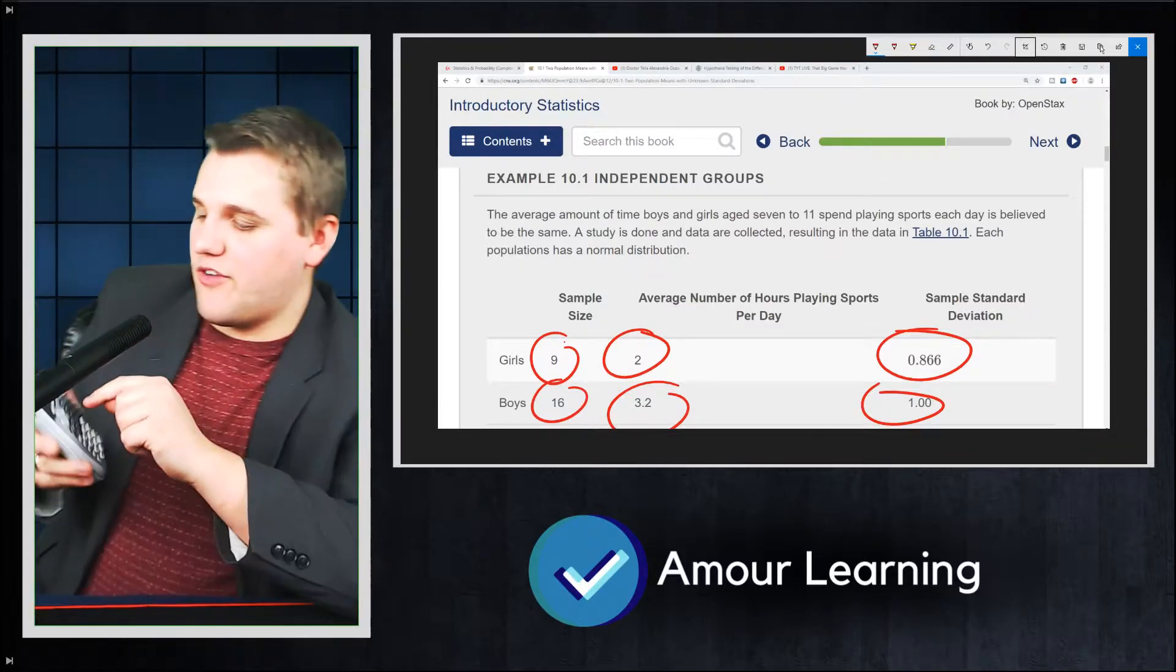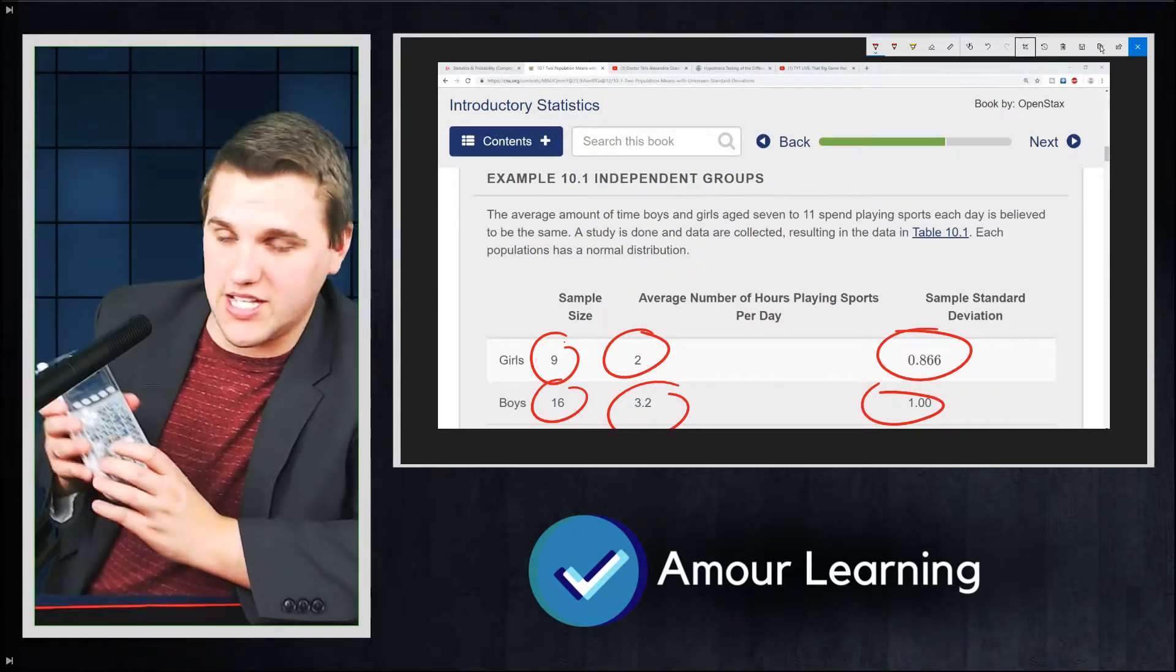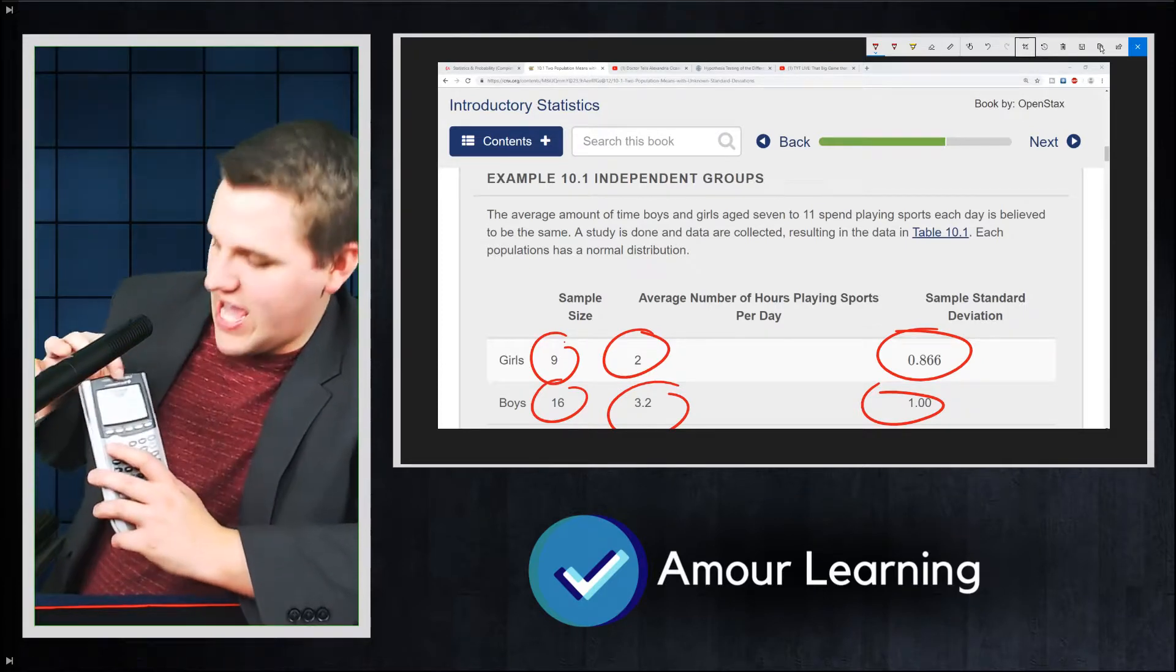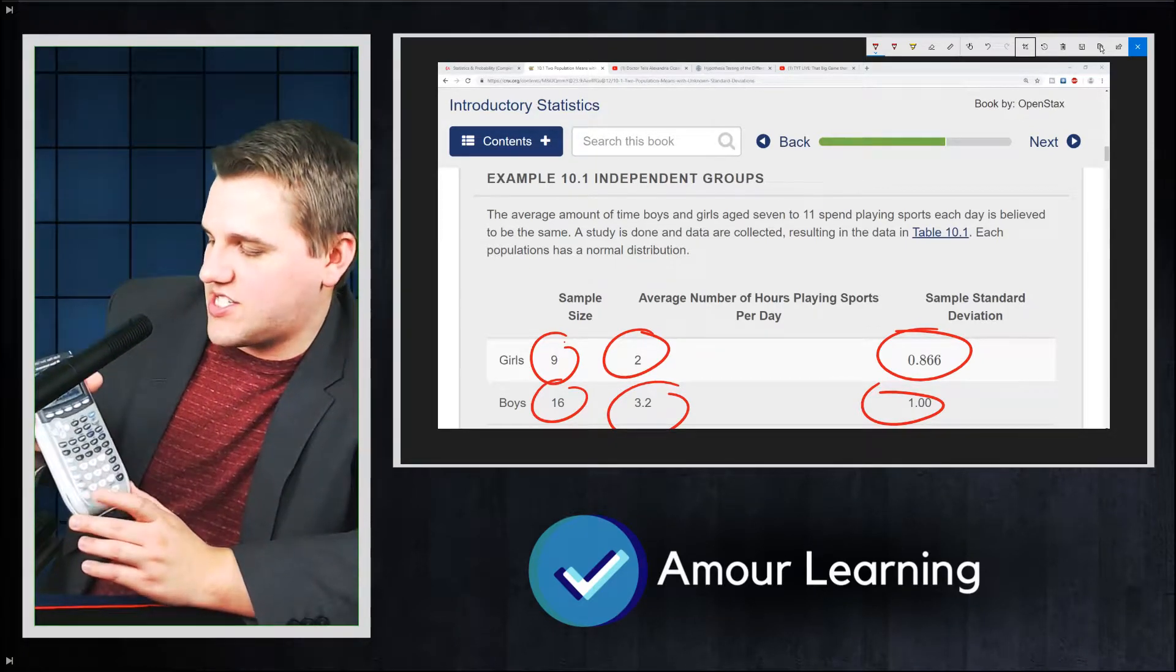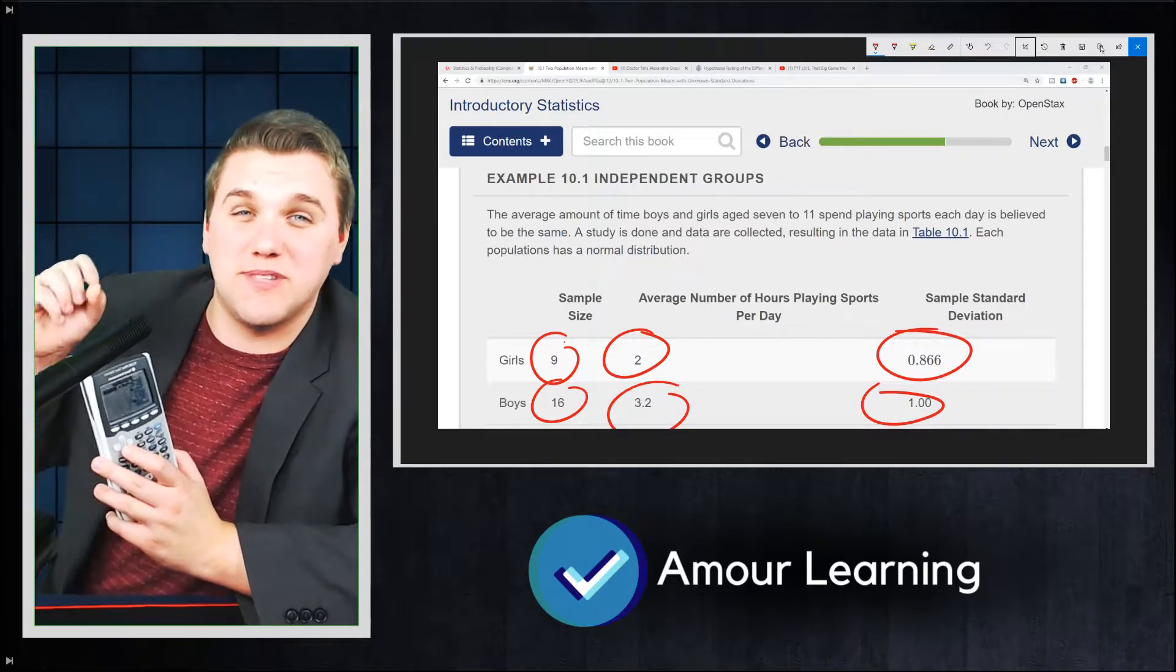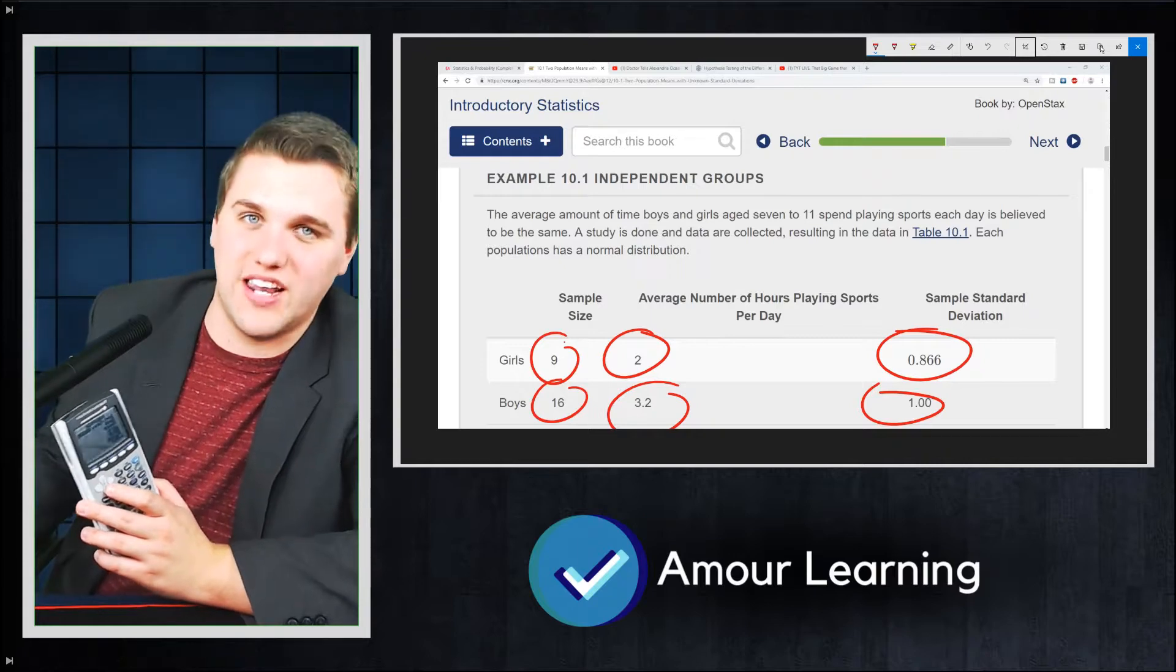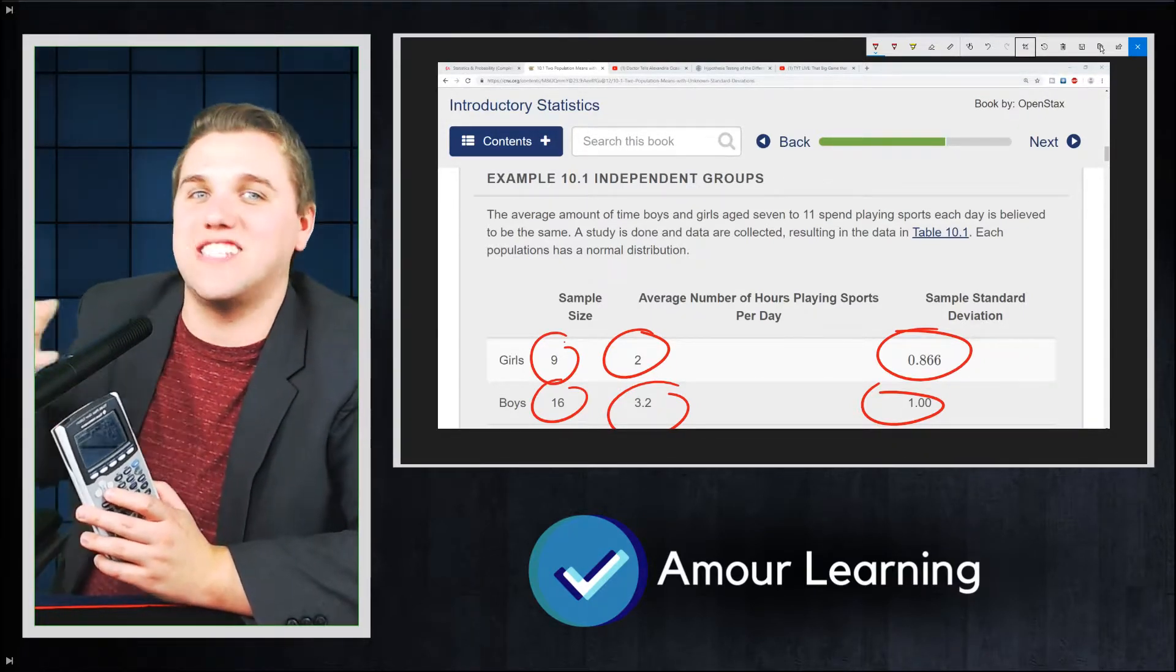However, if you go to stats and you scroll over to the tests menu and you go to the two sample t-test, you are going to see input as in data or stats. Let's scroll over to stats. This allows you to input specifically the statistics of the data that's necessary to do the two sample t-test rather than the data itself.